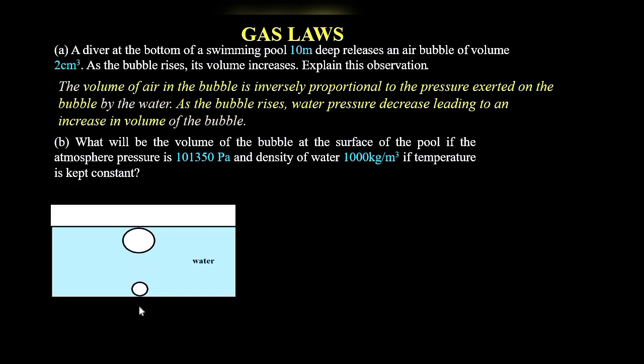We have the diagram as shown here. We have the bubble at the bottom of the swimming pool and the bubble after it's risen to the surface. We're told the swimming pool is 10 meters deep. When the bubble is at the bottom, we expect its pressure and volume to be different from the pressure near the surface and the volume near the surface.